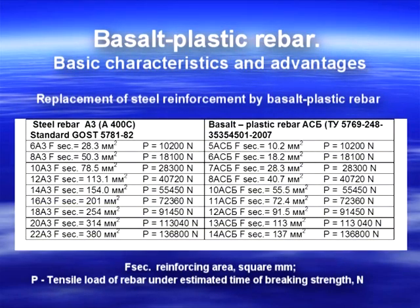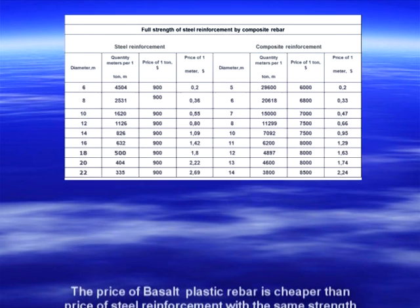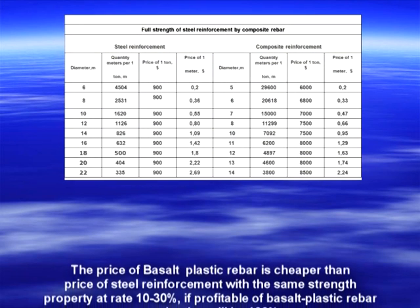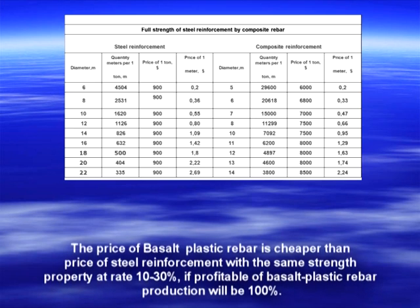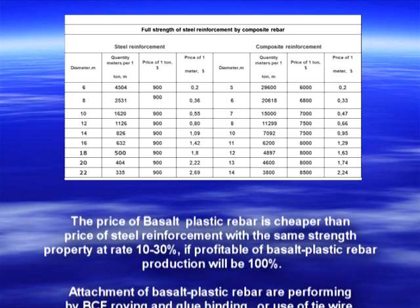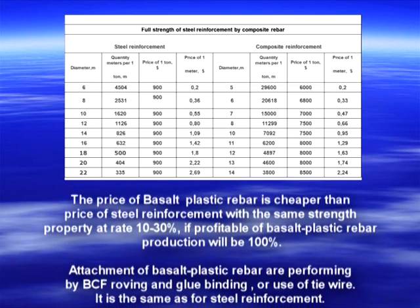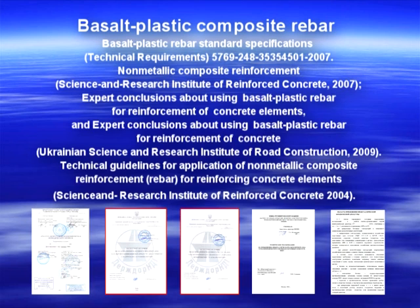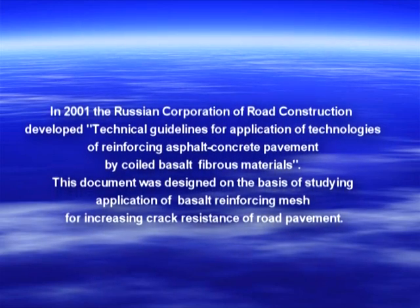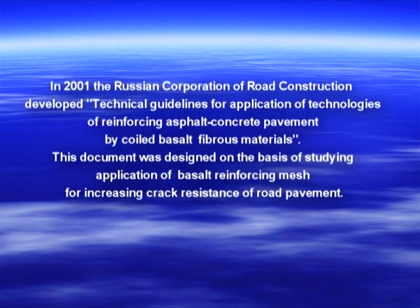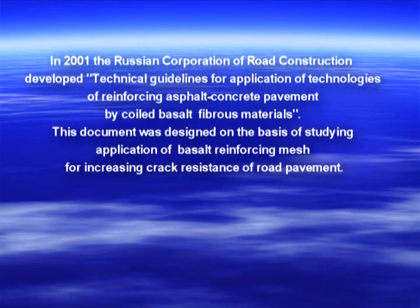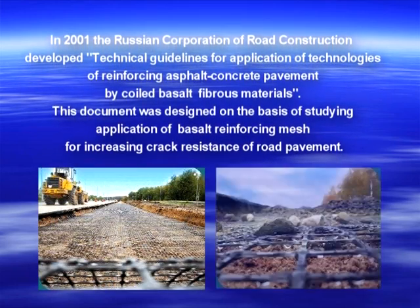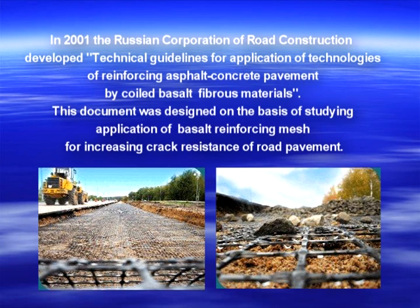Basalt plastic rebar basic characteristics and advantages: the price of basalt plastic rebar is 10–30% cheaper than steel reinforcement with the same strength properties, with production profitability of 100%. Attachment is performed by BCF roving and glue binding or tie wire, the same as for steel reinforcement. In 2001, the Russian Corporation of Road Construction developed technical guidelines for reinforcing asphalt concrete pavement using cold basalt fibrous materials, based on studying basalt reinforcing mesh for increasing crack resistance of road pavement.